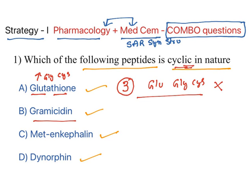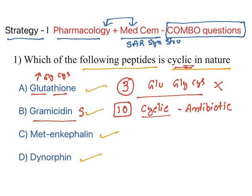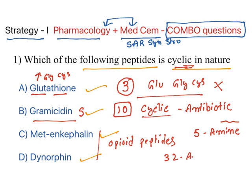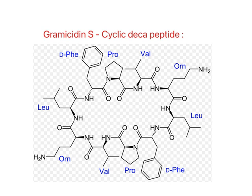Gramicidin S is a decapeptide — a 10-amino-acid cyclic peptide — and it is an antibiotic effective against both gram-positive and gram-negative bacteria. Met-enkephalin has five amino acids and is linear. Dynorphin has 32 amino acids and is also linear. Since the question asks about a cyclic peptide, the answer is gramicidin.